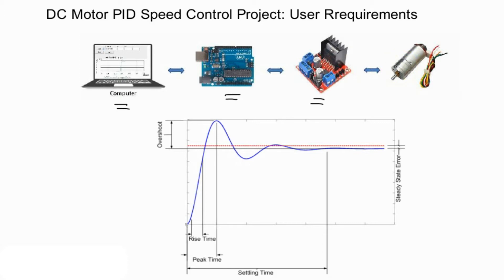The closed loop form of this digital control system will be discussed further in another video. However, the main objective of this lecture is to define clearly the user or the design requirements.